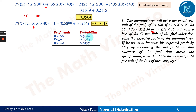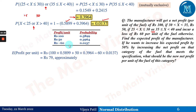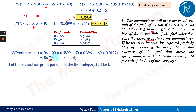The manufacturer gets rupees 100 with probability 0.5899, rupees 50 with probability 0.3964, and incurs a loss of rupees 60 with probability 0.0137. The expected profit is: (100 × 0.5899) + (50 × 0.3964) + (-60 × 0.0137) ≈ rupees 79. So the expected profit of the manufacturer is approximately rupees 79 per unit.